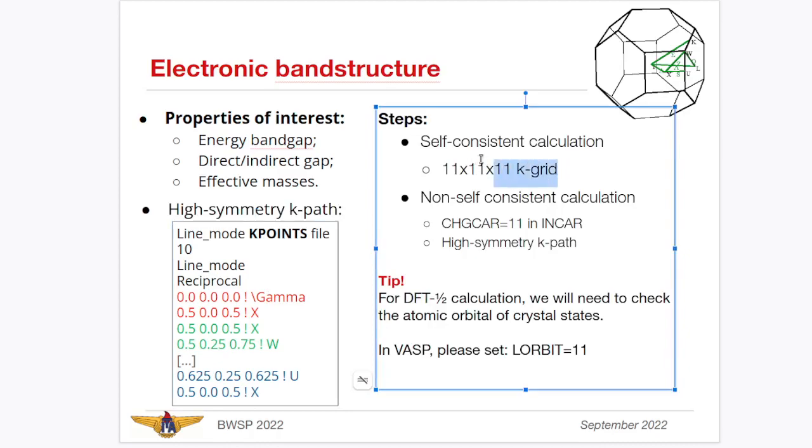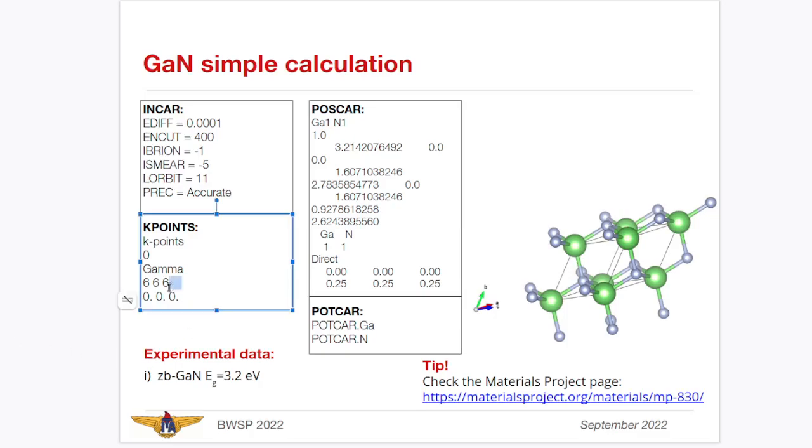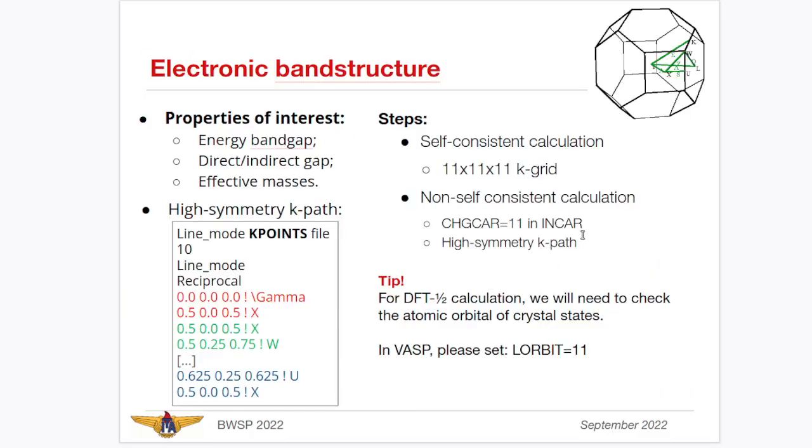The first step is the self-consistent calculation with 11, 11, 11. I performed at 6, but let's just change this. And then, on the second step, I perform a non-self-consistent calculation. I tell VASP to make the electronic charge and the electronic density fixed. I do this with ICHARG equals 11. And then use this high-symmetric k-path, described here. Let's perform these calculations.